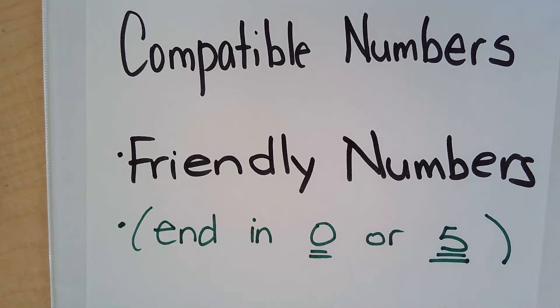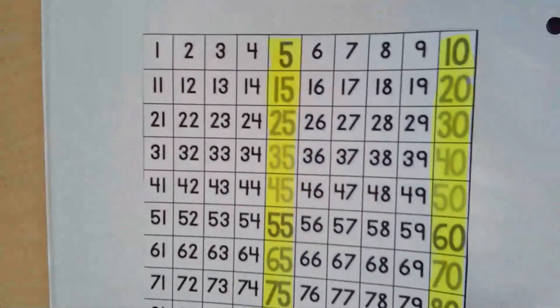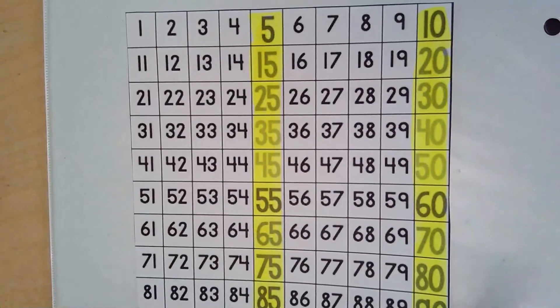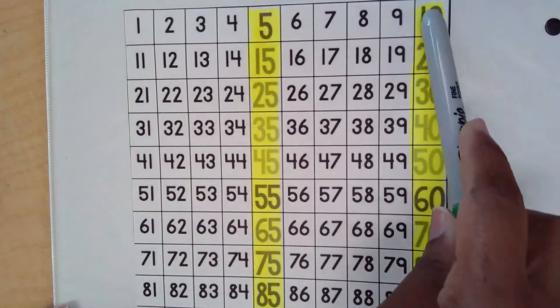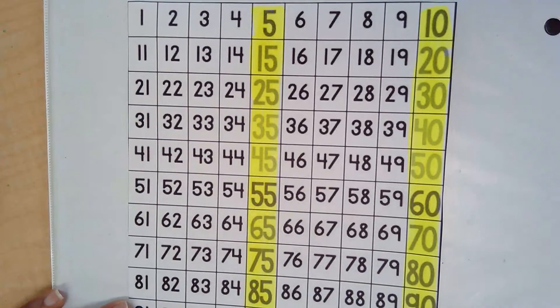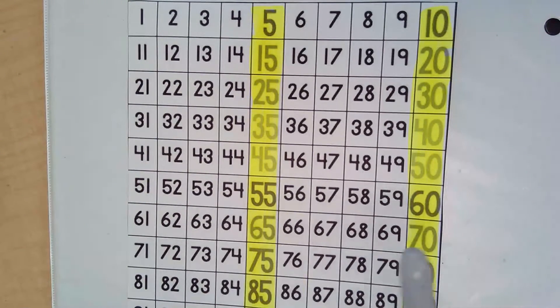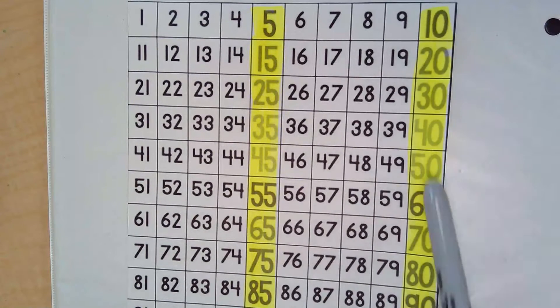So I have a hundreds chart right here, and if you look carefully you'll see that I highlighted my columns of fives and my columns of tens. Your compatible or friendly numbers are any of these numbers that have been highlighted.